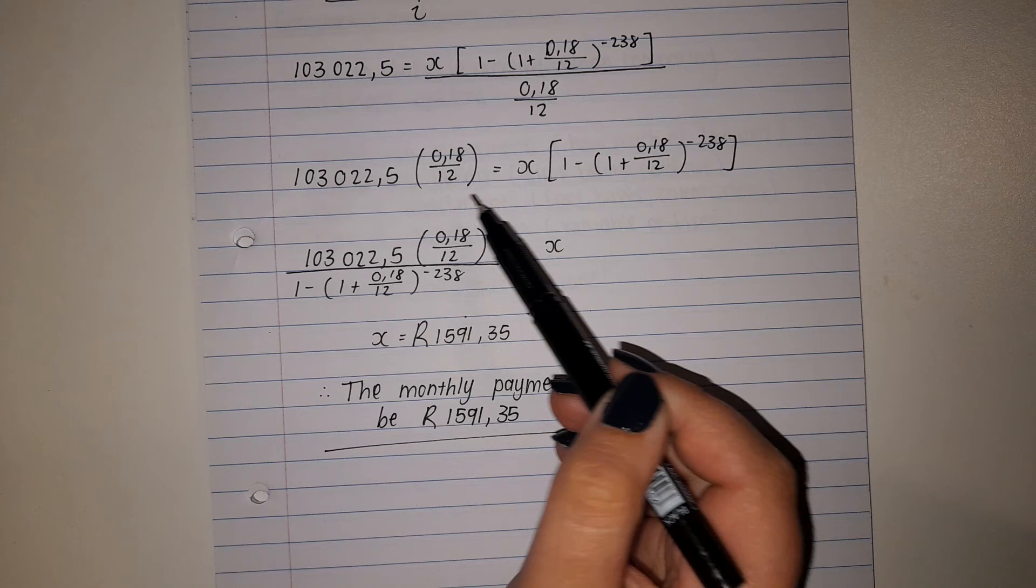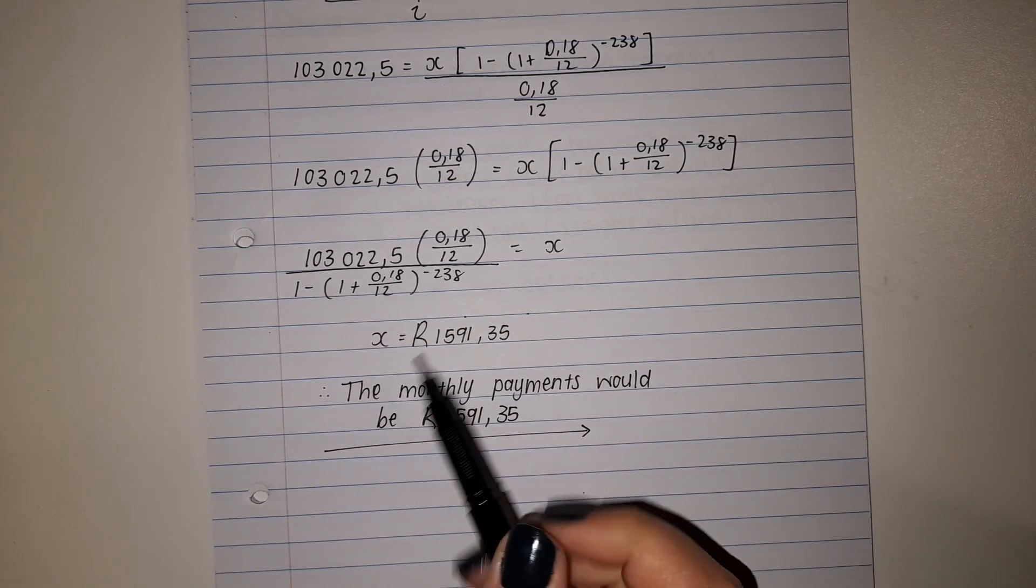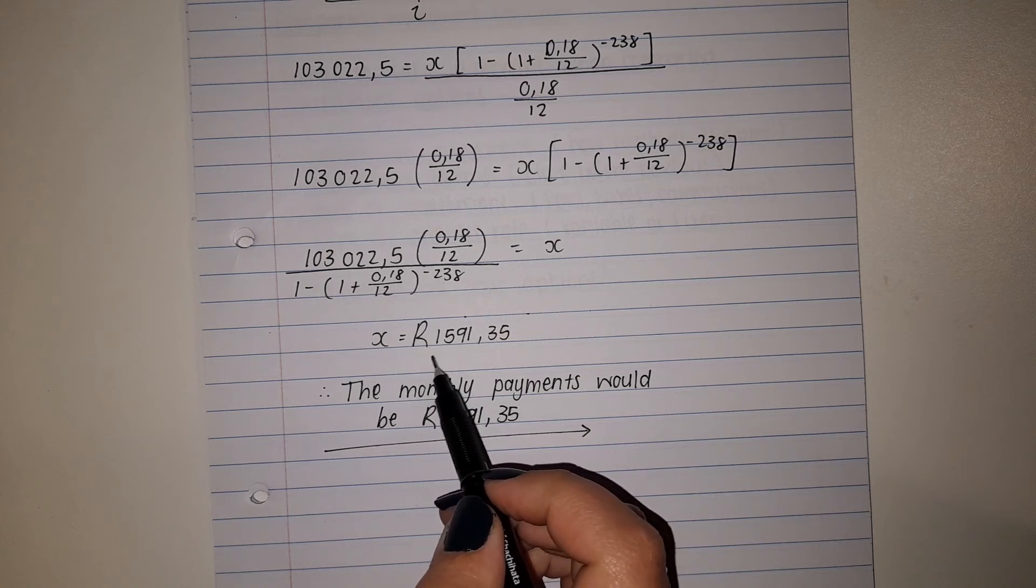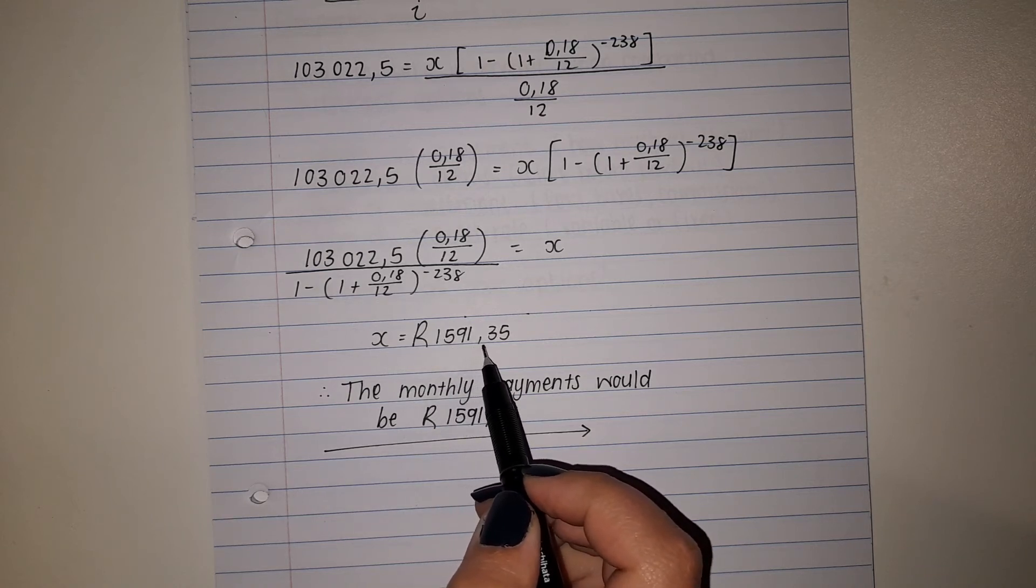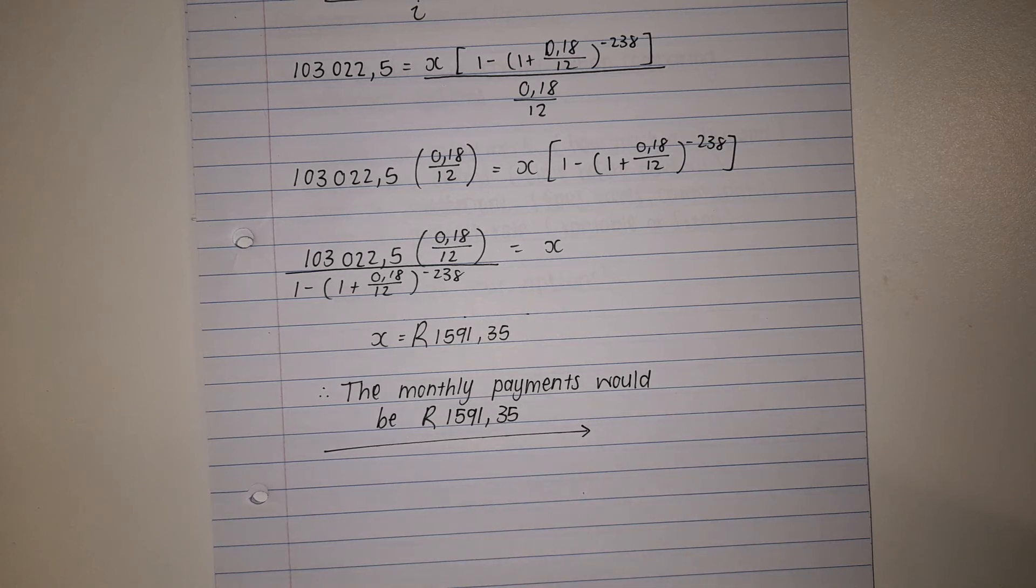Now this whole thing I am going to put into my calculator and then I would see, well Bongi's monthly installments would be 1591.35. That would be what she needs to pay back every month.